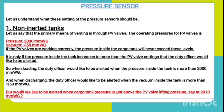The primary means of venting is through PV valves. The operating pressure for the PV valve is 2000 mm wg and vacuum minus 350 mm wg. If the PV valves are working correctly, the pressure inside the cargo tank will never exceed these levels. When loading, the duty officer would like to be alerted when pressure inside the tank exceeds 2000 mm wg, and when discharging, when vacuum exceeds minus 350 mm wg.